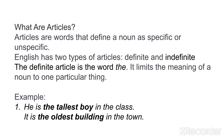This is an indefinite article. 'A' and 'an' refer to something not particular — not a specific thing. 'The' is used for a definite, specific reference. For example, 'He is the tallest boy in this class' — here we use 'the'.